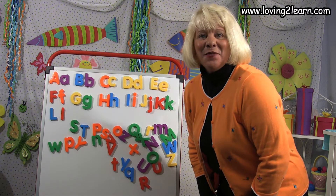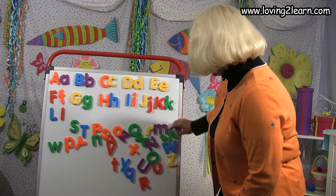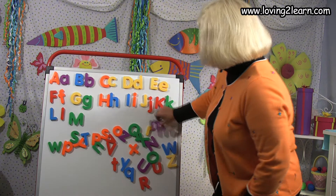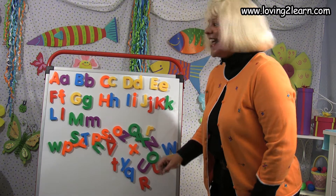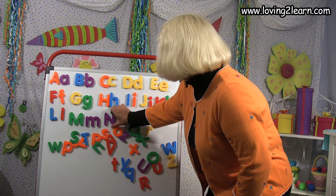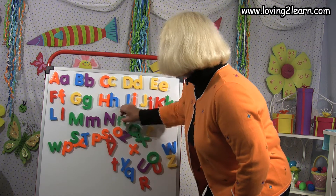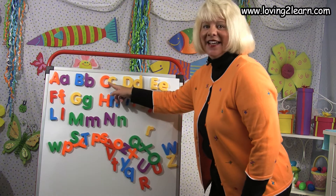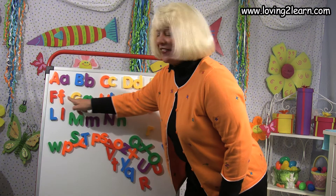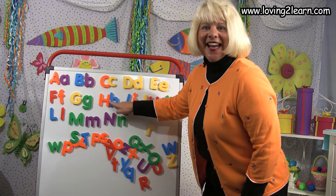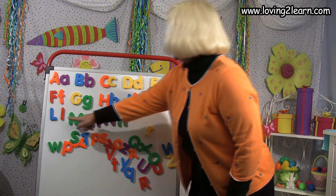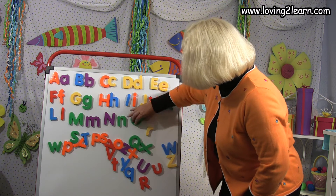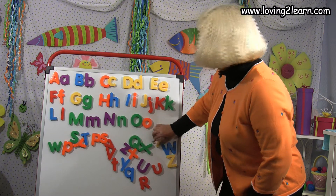And the small l. Then what letter? M. We have the capital M and the small m. So we have A, B, C, D, E, F, G, H, I, J, K, L, M, N. You've got it. Capital O, small o.